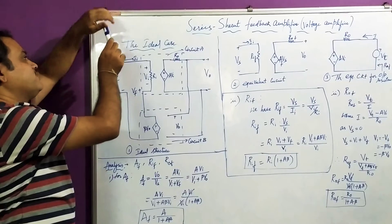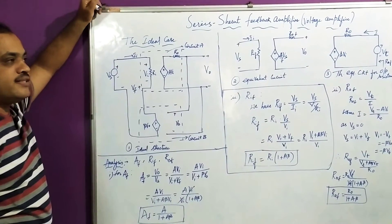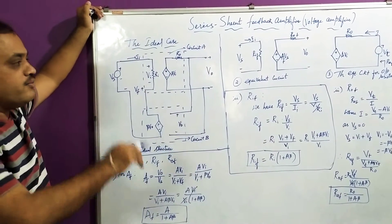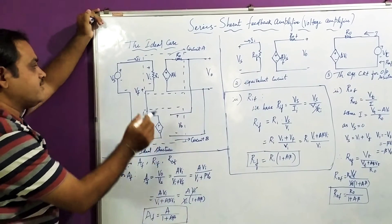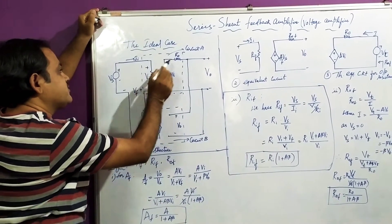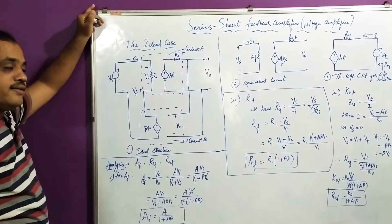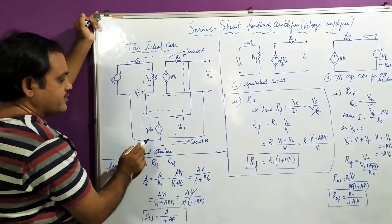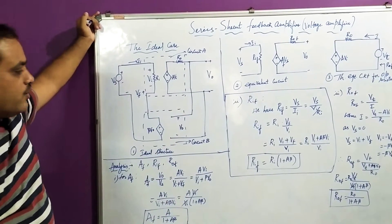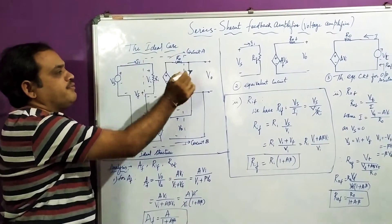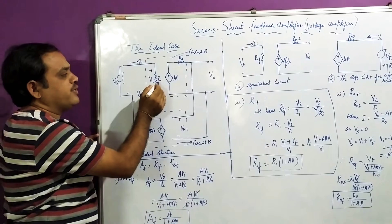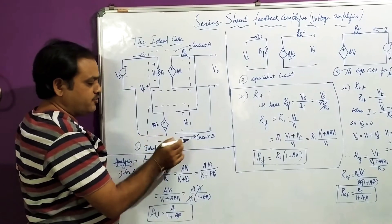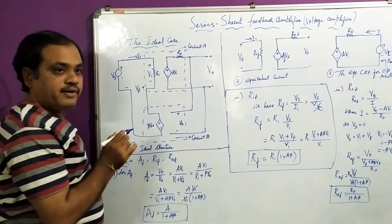We are going to study only the ideal case of the series-shunt feedback amplifier. You will see a circuit diagram which is the outcome of the topology we discussed in the last session. It has two circuits: Circuit A and Circuit B. Circuit A is nothing but your open-loop voltage amplifier, and Circuit B is nothing but the feedback amplifier. Circuit A consists of an open-loop gain A, input resistance RI, and output resistance R0. The feedback amplifier, Circuit B, consists of the feedback gain beta.